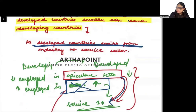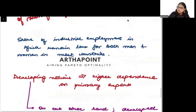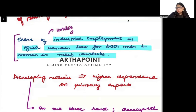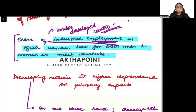As developed countries switch from industry to the service sector, the share of industrial employment in Africa remains low for both men and women in most countries — showing how underdeveloped it is, since most people are still in the agricultural sector with low contribution from industry.